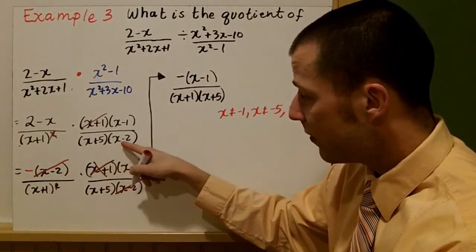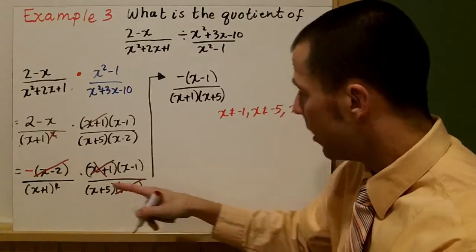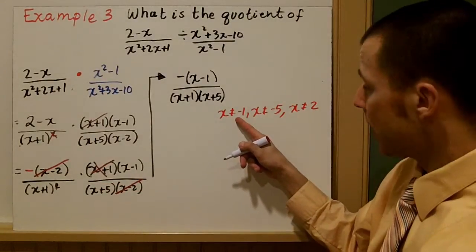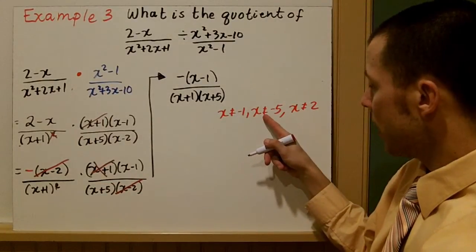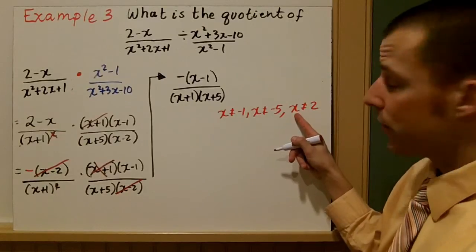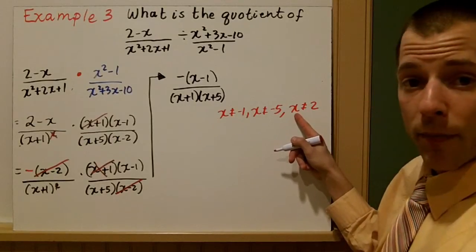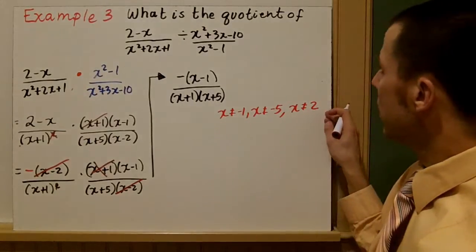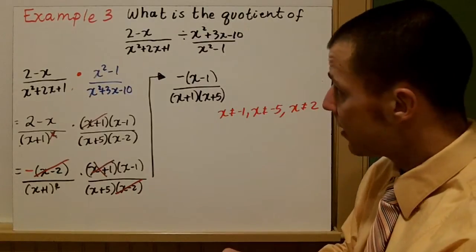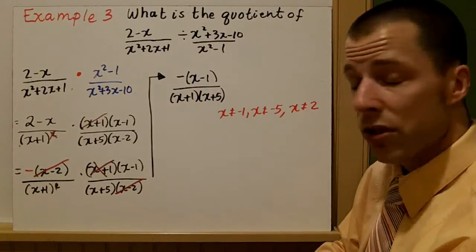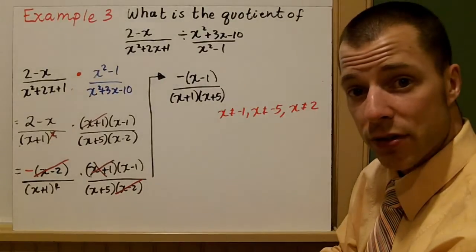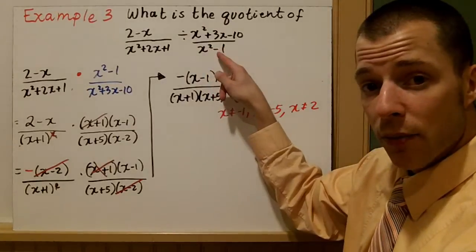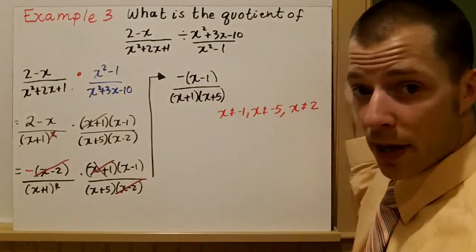Note all your restrictions: negative 5, 2, and negative 1. X cannot equal negative 1, cannot equal negative 5, cannot equal 2. Those are all the restrictions, and so that's dividing two rational expressions — just flip the second rational expression and multiply.